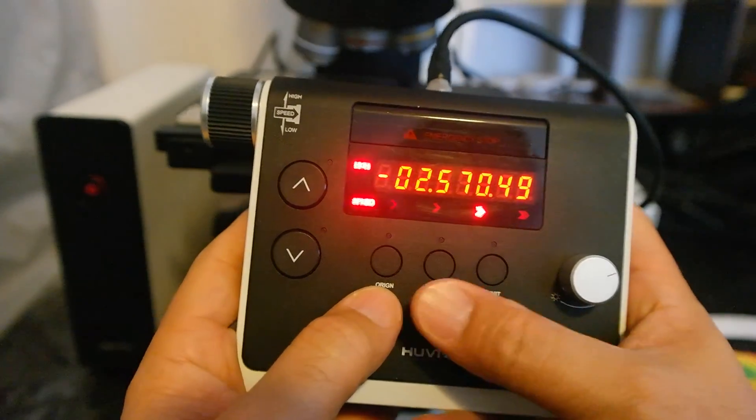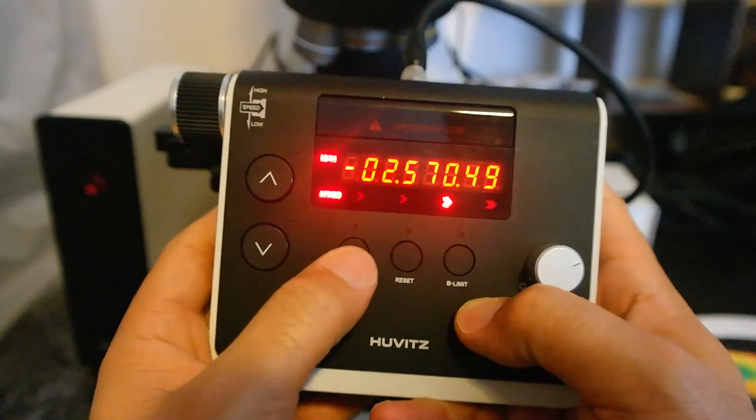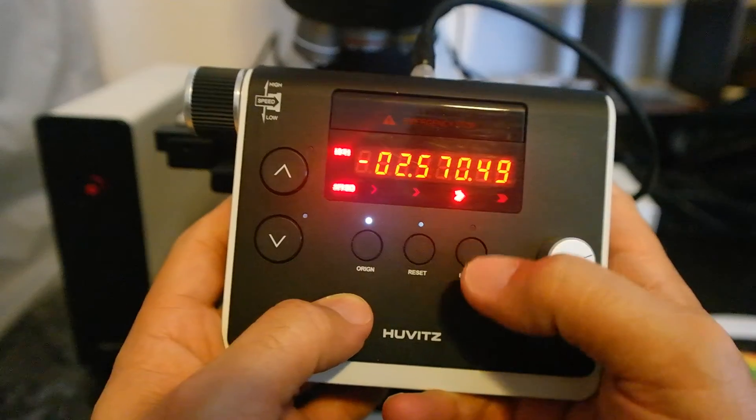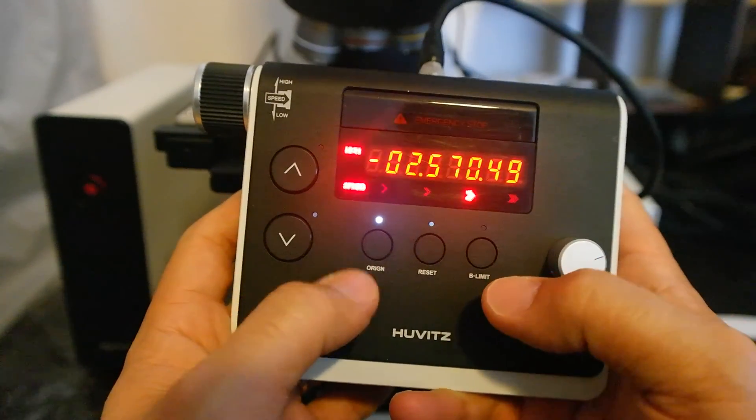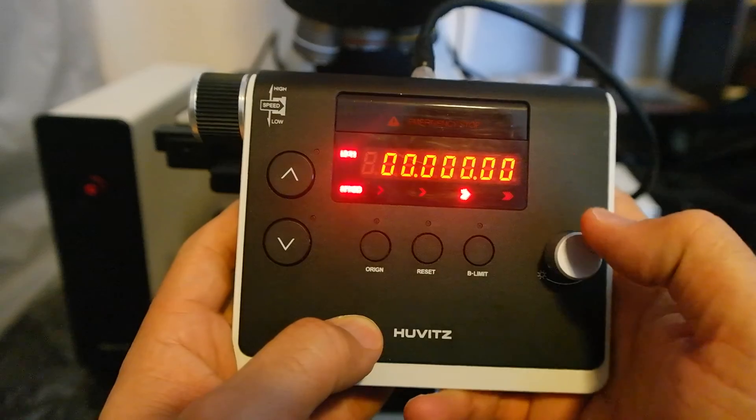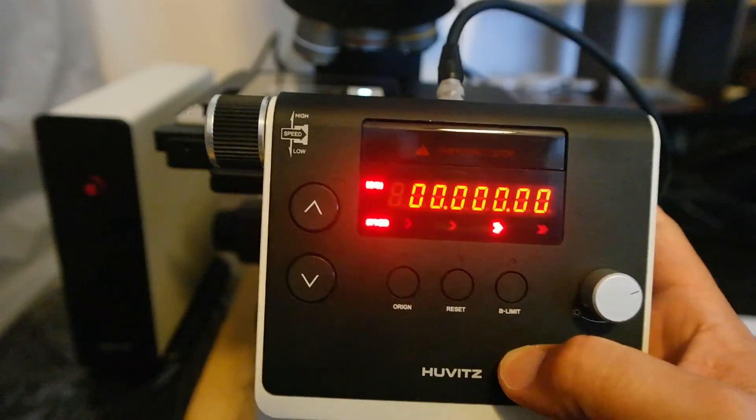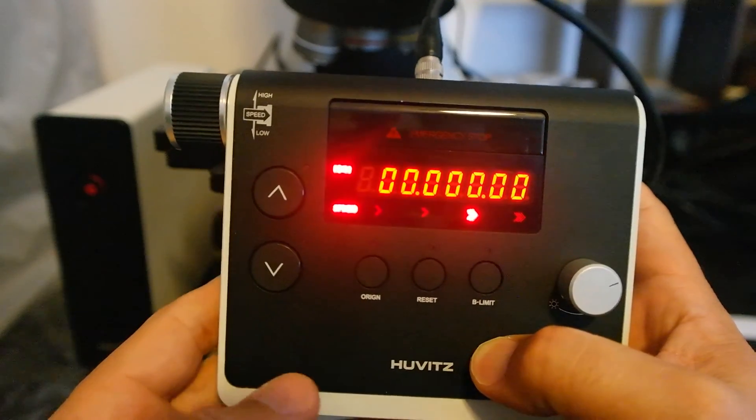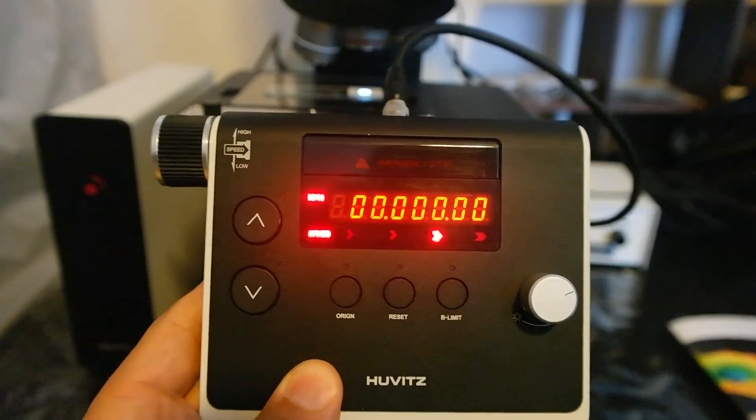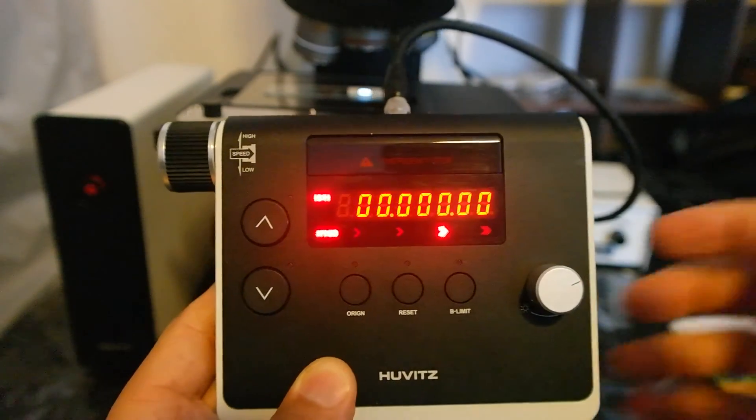And here are 3 buttons: origin. So you can say this is the origin and it will remember that origin. You can reset it so everything will be 0. The B here is the bottom limit, so you can define the limit of bottom and it won't go lower than that.